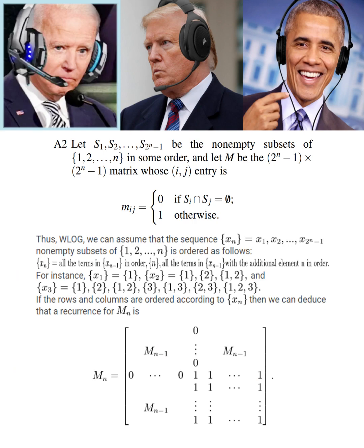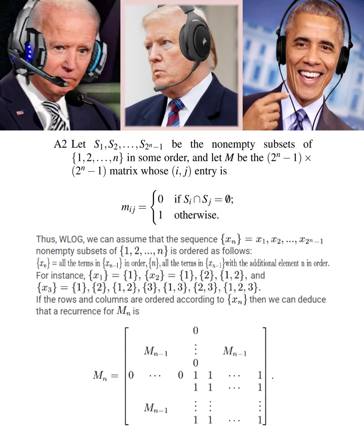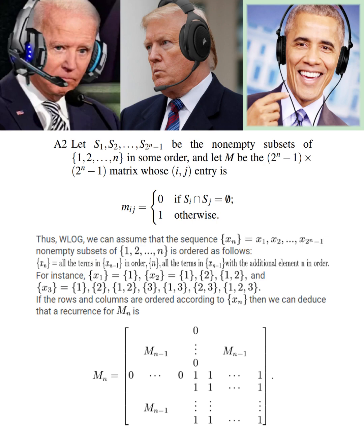Great idea, Obama. Then we can notice that M sub N can be expressed in terms of M sub N minus 1, as shown here. Now Trump, why do you think is the underlying reason for that? Don't ask me. I don't fucking know. Here's a hint. It has to do with some basic set theory.